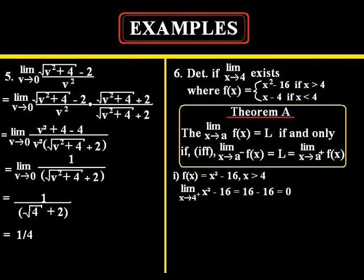First off we're going to determine if f of x equals x squared minus 16 has a limit as x approaches four from the right. So in order to do this we're just going to simply plug in the four into x squared minus 16. We get 16 minus 16 and that equals to zero.